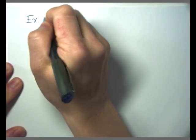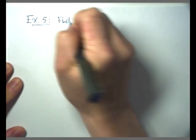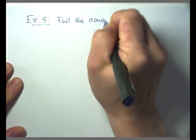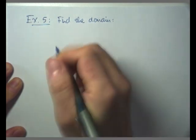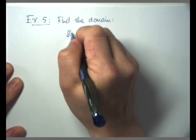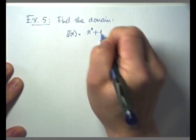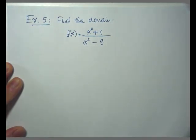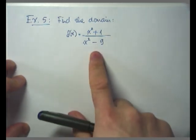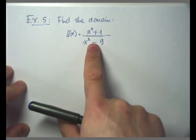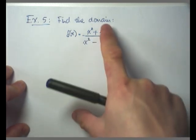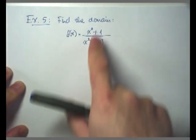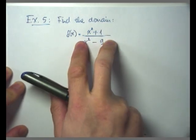Getting into my fifth example, let's look at another function that involves fractions. We want to find the domain. Here my function f of x equals x cubed plus 1, all over x squared minus 9. In this problem we only run into the first concern, where we're having a fraction. When you have a fraction, keep in mind your denominator cannot be equal to zero.